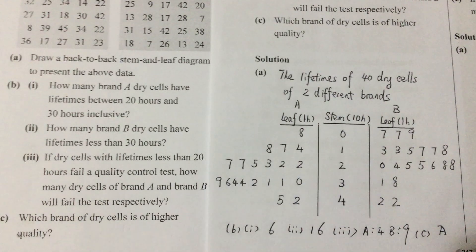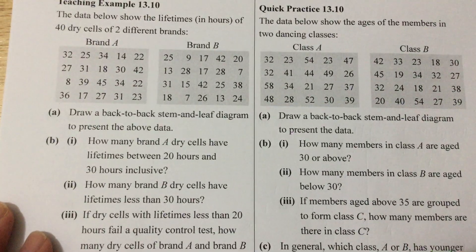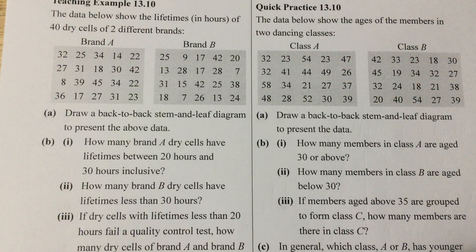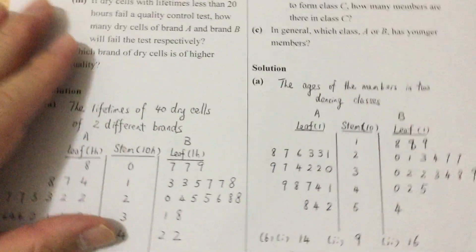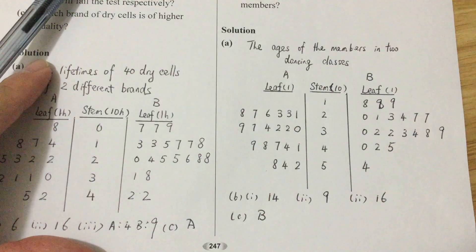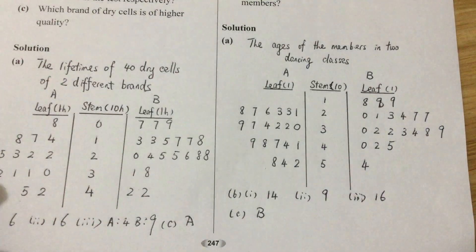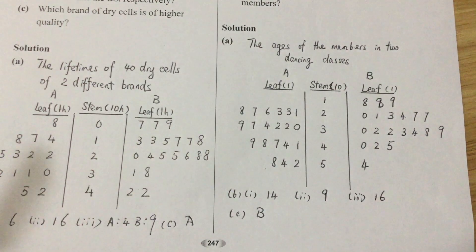So this is the answer for this teaching example. And now you are going to do the correct practice by yourself and answer the questions. Please pause the video. Now this is the answer for the correct practice. You will see this is the age of the members in the dancing cast. And afterwards we will have B1, B2, B3, and part C. This is the end of this video. So make sure that you know how to do the stem and leaf and the back-to-back stem and leaf diagram. Thanks for watching.